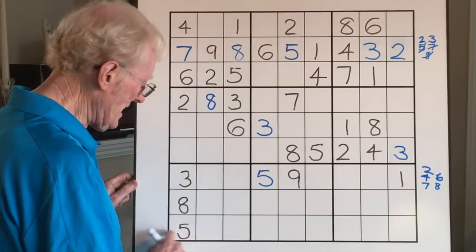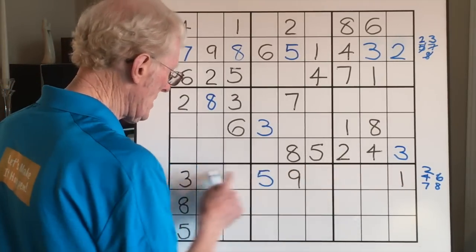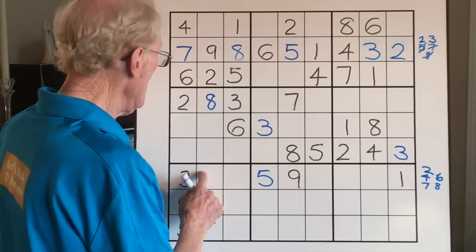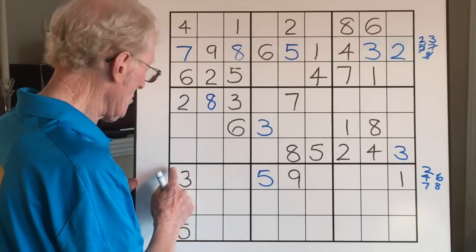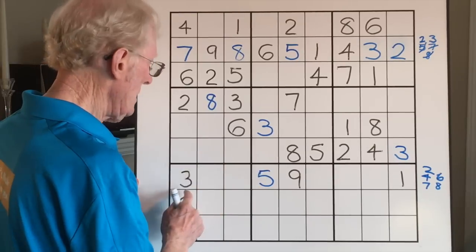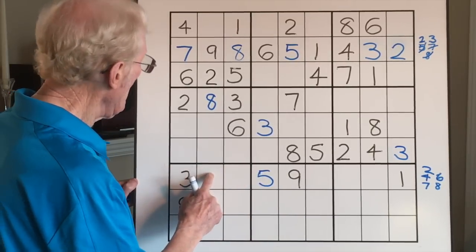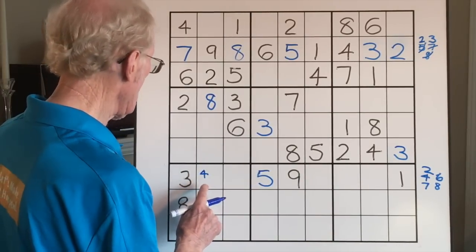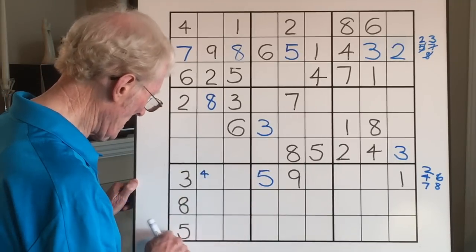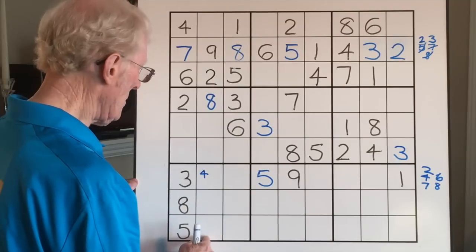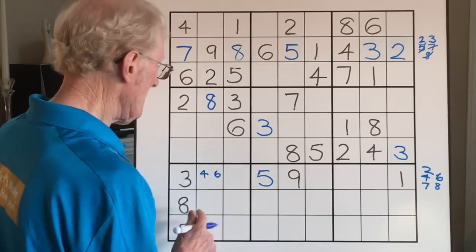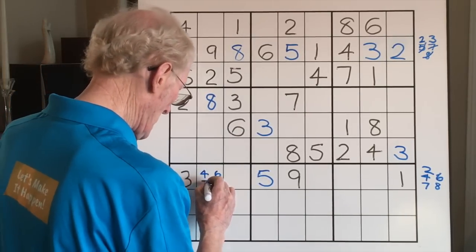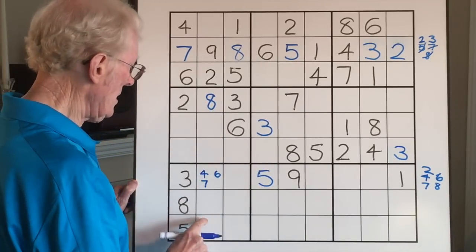Starting with the first cell, we look at this block — is there a 1 in the block? No. Is there a 1 in the row? Yes, across there, so you can't put a 1 there. There's a 2 up in the column, so you can't have a 2 there. Can't have a 3 because this block already has a 3. A 4 — yes, you could have a 4. A 5 is spoken for. A 6 — no 6 in this block, no 6 in this column, so we could put a 6 there. A 7 — no 7 in this column, no 7 in this block, so the 7 goes there.